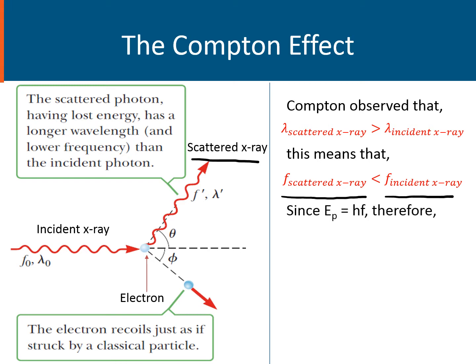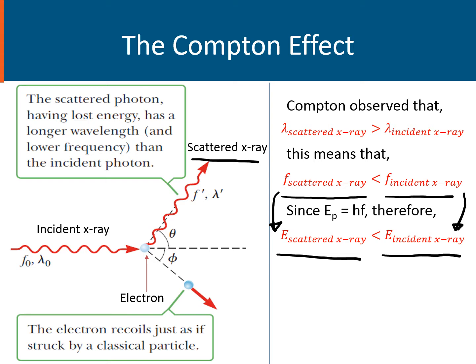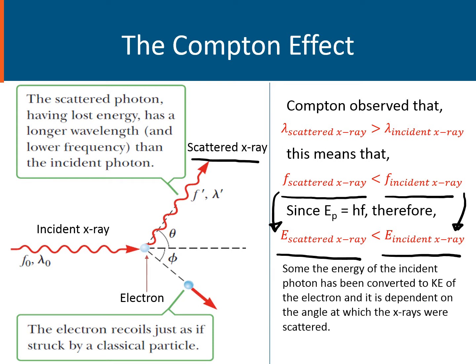Since the energy of the photon is equal to Planck's constant multiplied by the frequency, therefore the energy of the scattered x-ray is much lesser compared to the energy of the incident x-ray. This means that the incident photon actually lost some of its energy, and this energy has been converted into the kinetic energy of the electron.